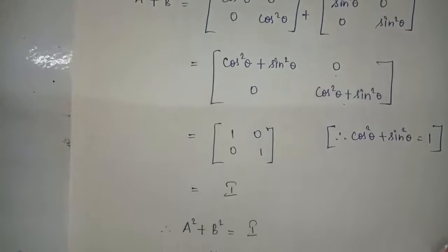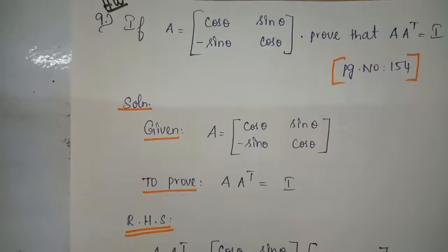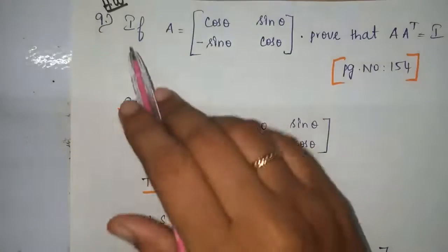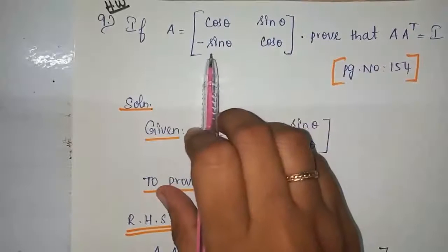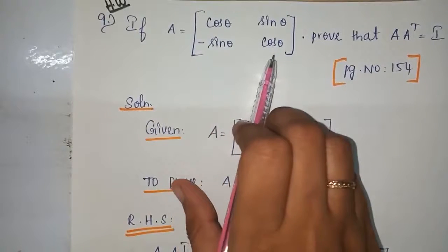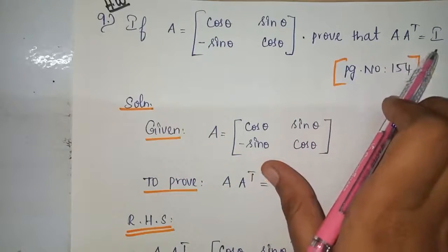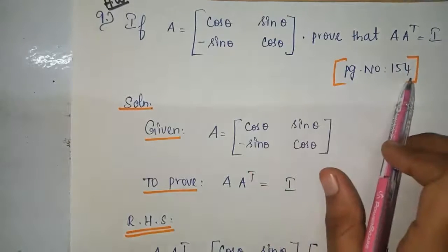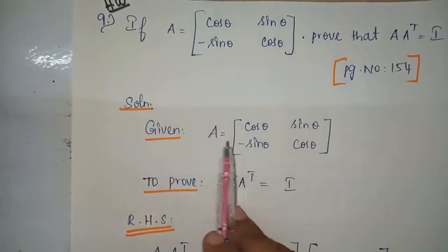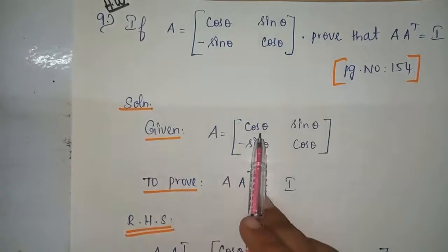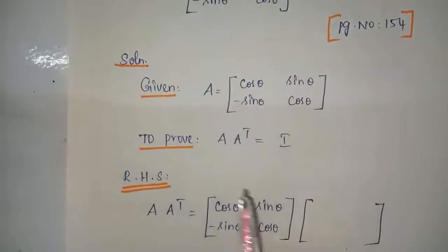Problem number 9 is your homework problem: if A equals cos theta sin theta minus sin theta cos theta, then prove that A times A transpose equals I, which is in page number 154. Solution: given A equals cos theta sin theta minus sin theta cos theta. To prove A times A transpose equals I.